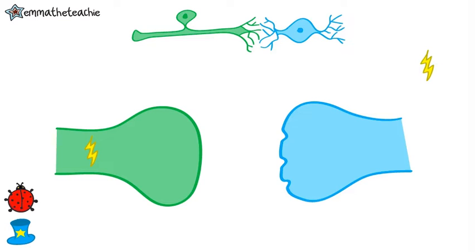Although the nervous system is very fast, there is something slowing it down: synapses.